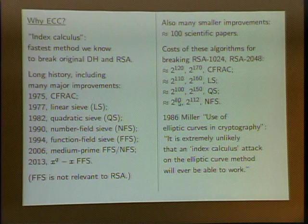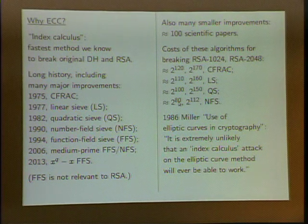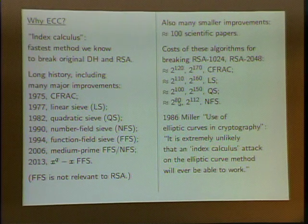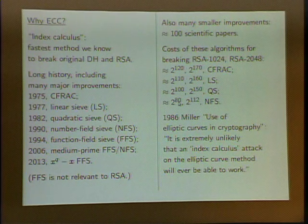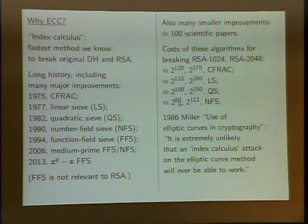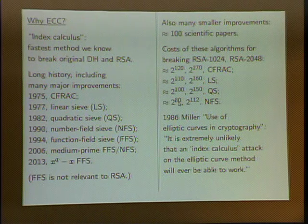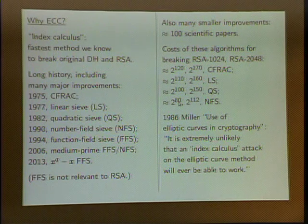In the middle of this, even before the number field sieve, Victor Miller was proposing to use elliptic curves. In a Crypto 1985 paper, he proposes using elliptic curves, and one of the arguments he gives is that mathematically it doesn't look like there could be anything like these index calculus attacks. He shows that lifting — which is used to attack Diffie-Hellman in finite fields — wouldn't exist for elliptic curves.